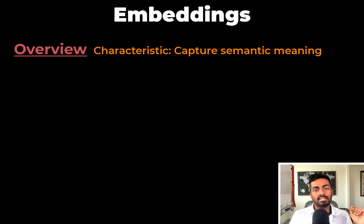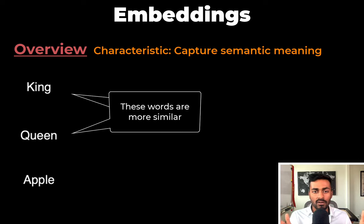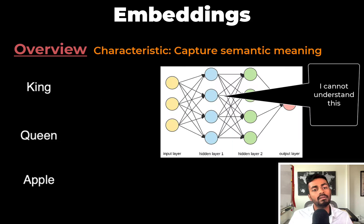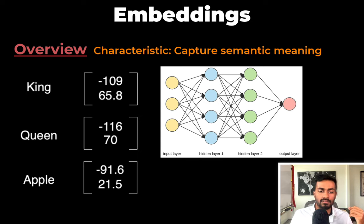Embeddings capture the semantic meaning of data. Let's consider three words: king, queen, and apple. Now the words king and queen are more similar to each other than they are to the word apple. For the neural network to understand this difference, each word needs to be represented as a vector. So let's say that each word is represented by a two-dimensional vector.